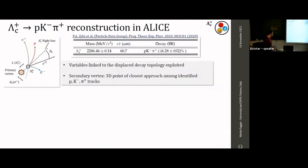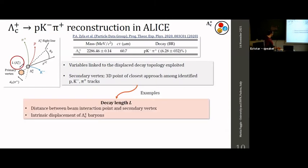For the reconstruction of the Lambda_c baryon, we exploit two different decay channels. The first is the pKπ channel, where a Lambda_c candidate is reconstructed as a triplet of identified proton, kaon, and pion. We also exploit the intrinsic displacement of the Lambda_c, which has a sizable cτ of around 61 microns — this allows us to resolve the decay point (secondary vertex) from the primary interaction vertex. We then exploit topological variables such as the decay length, the distance between these two vertices.